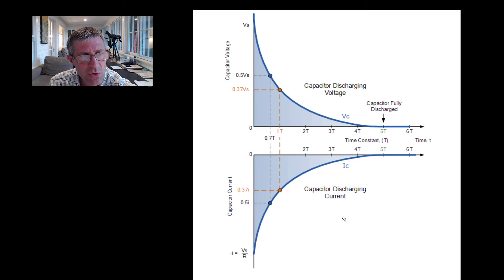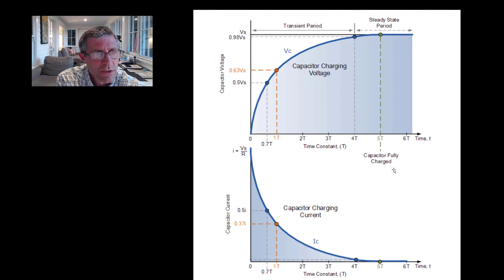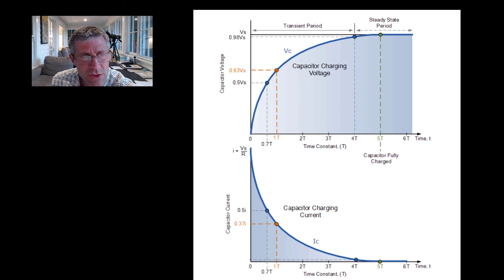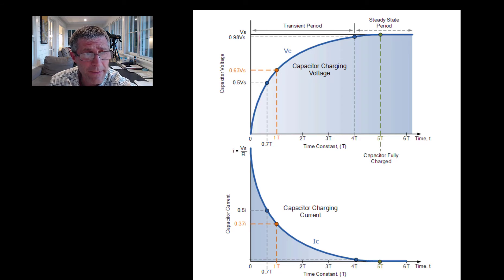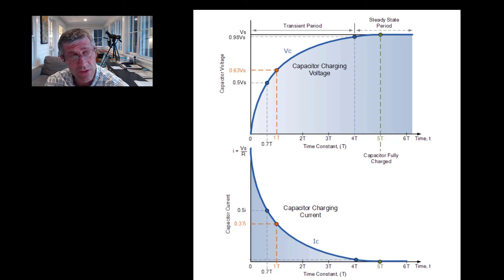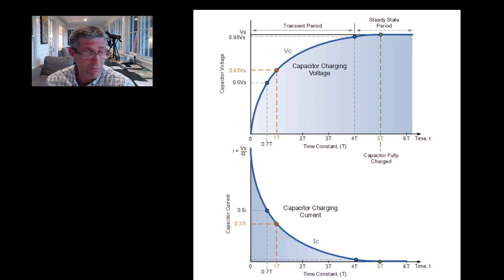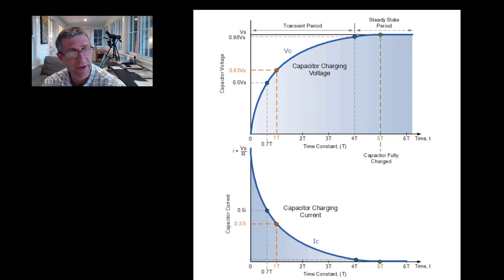What I end up with is a charging graph for voltage, and we can look at a charging graph for current as well. So for charging the capacitor, the voltage across my capacitor is going to be increasing in this decay curve. On my x-axis I'm indicating the time points — after one time constant, which is R times C for that circuit, I'll be about 0.63 of my total voltage. After two time constants I'll be closer, and after four or five time constants we consider the capacitor to be fully charged.